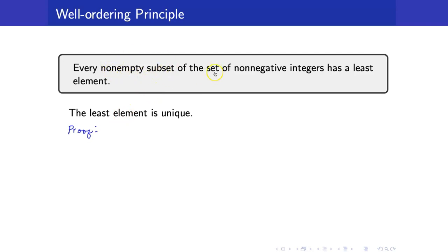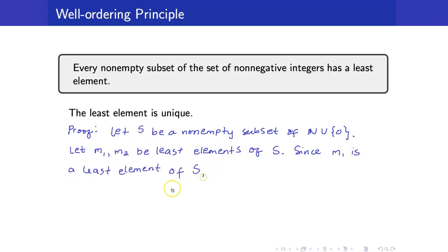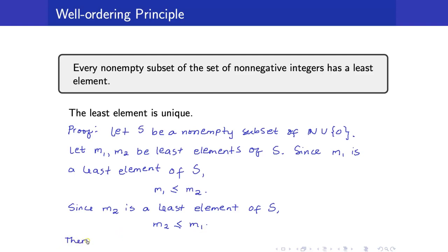We are only proving the uniqueness part here. Let S be a non-empty subset of the set of non-negative integers. To prove uniqueness, we get two such elements and show they must be the same. Since M1 is a least element and M2 is an element of S, we must have M1 ≤ M2. However, since M2 is also a least element, M2 ≤ M1. Therefore M1 = M2. That concludes our proof.